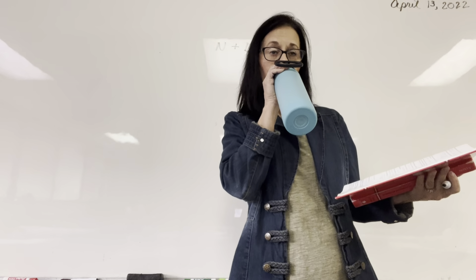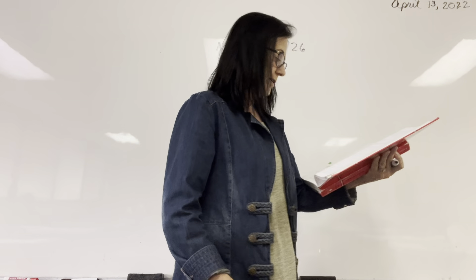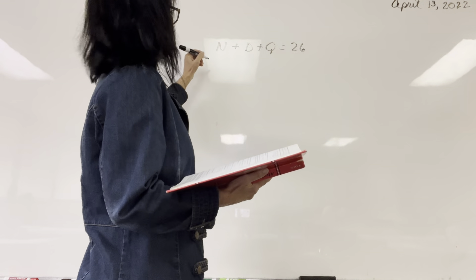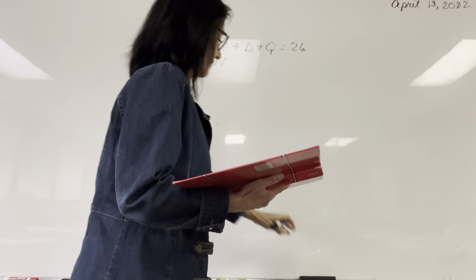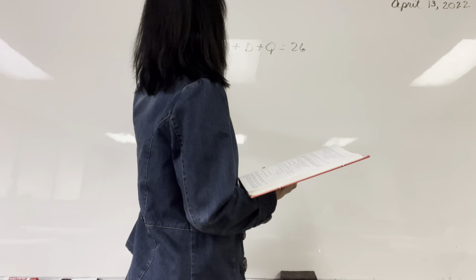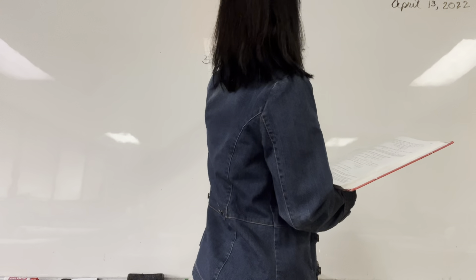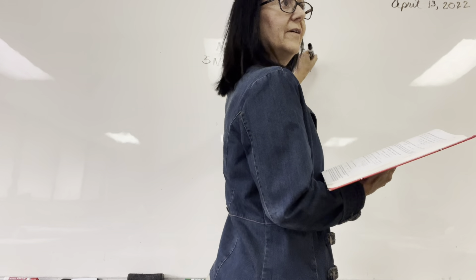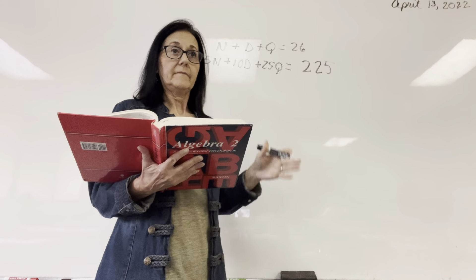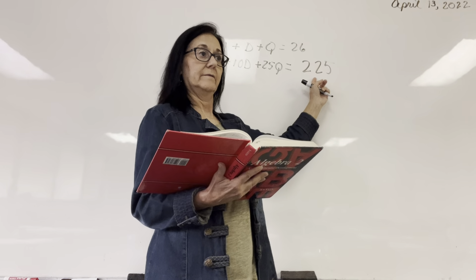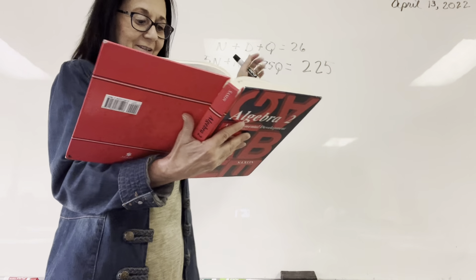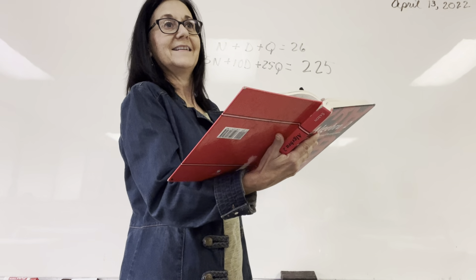And their value was $2.25. What do you think I should write there? The value of nickels — so 5N plus 10D plus 25Q equals 225. Do I put a decimal here? No. If I don't put a decimal in these numbers, I don't put a decimal here. If the value had been $10, I would write 1000 — you have to include your cents, C-E-N-T-S. You should use your S-E-N-S-E.